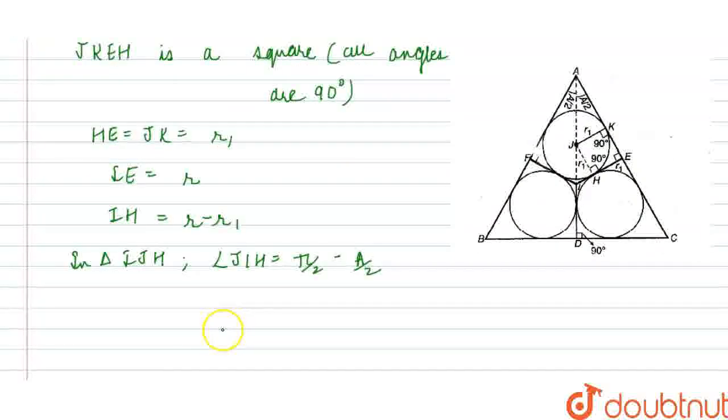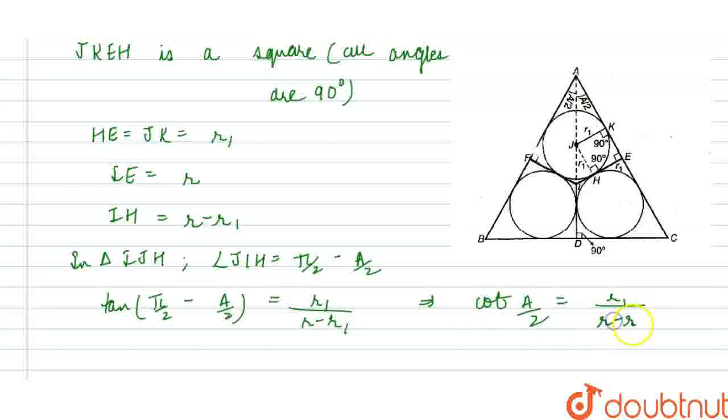Now proceeding forward, tan(π/2 - A/2) - basically I am taking tangent of this angle JIH, which is π/2 - A/2. This equals JH/IH, which I can write as R1/(R-R1). Solving it, it equals cot(A/2), so therefore cot(A/2) equals R1/(R-R1).